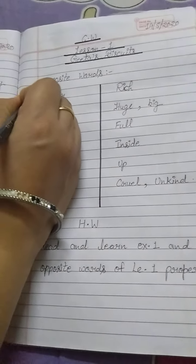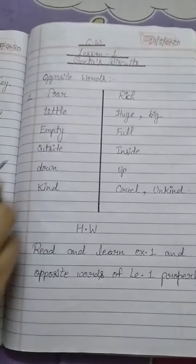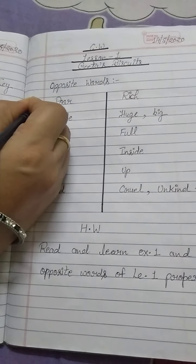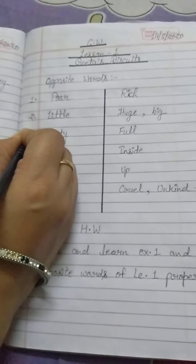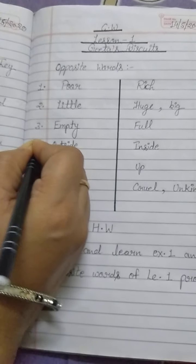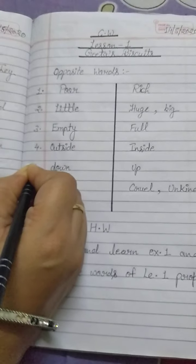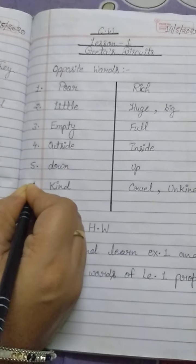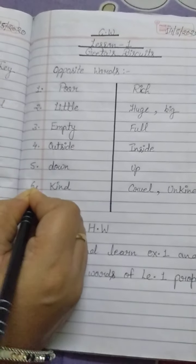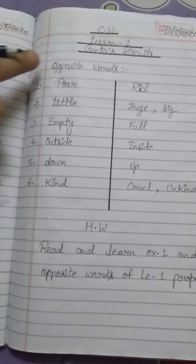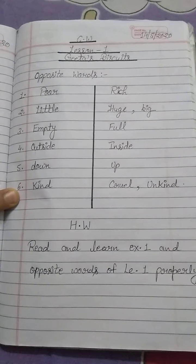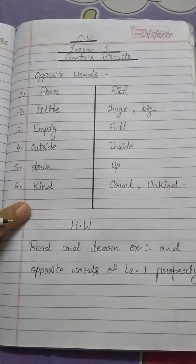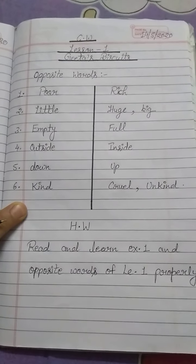So how many opposite words are here? One, two, three, four, five, six. There are six opposite words. You will not miss them — learn all of them. Understand?